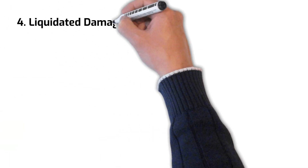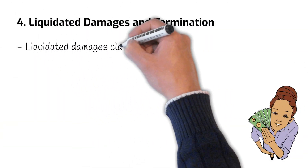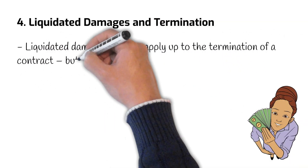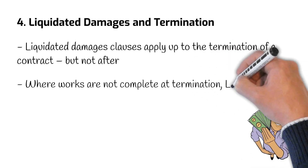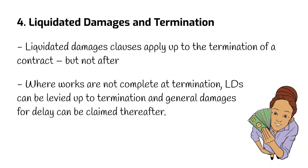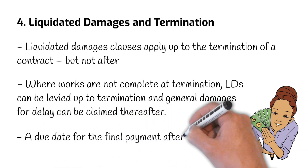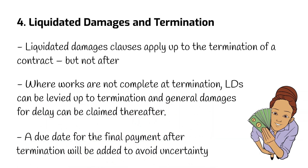Number 4: Liquidated Damages and Termination. Liquidated Damages clauses apply up to the termination of the contract, but not after. Where works are incomplete at termination, LDs can be levied up to the termination, and general damages for delay can be claimed thereafter. Clear wording will be required should the parties wish to agree a different approach. Also, a due date for the final payment after termination will be added, removing the uncertainty as to when the final payment after termination is due.